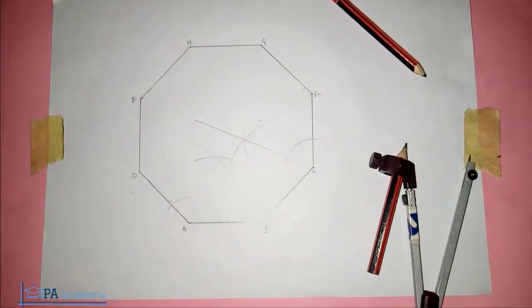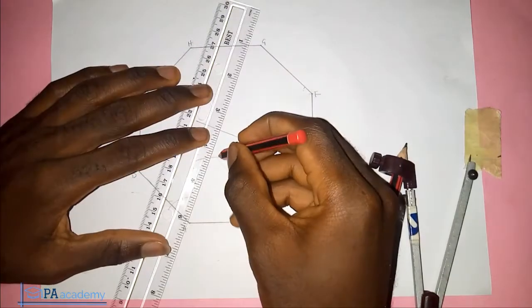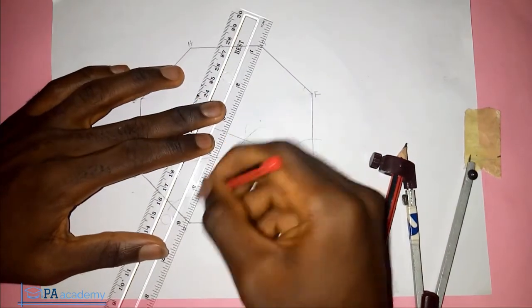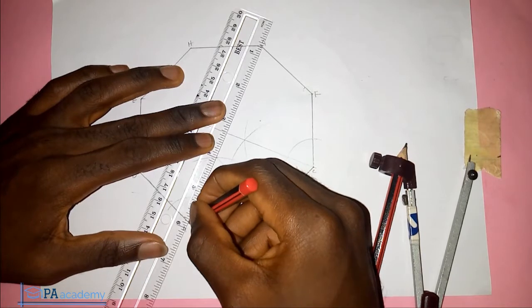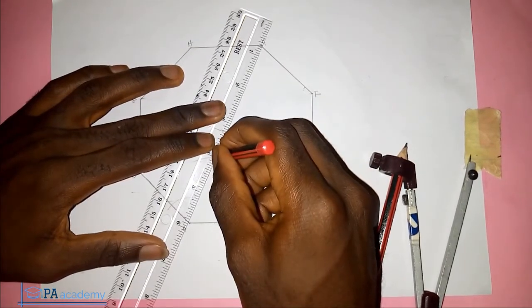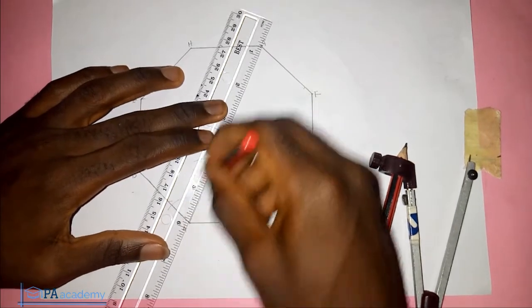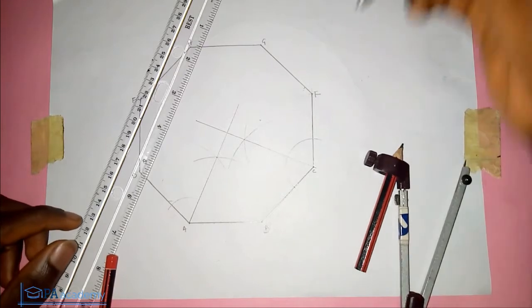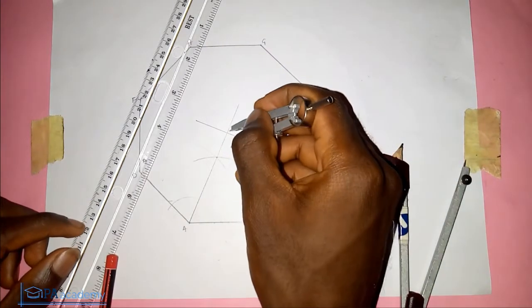Now we have the two arcs meeting. You draw it straight down to point A.